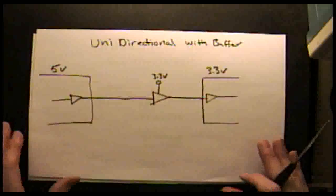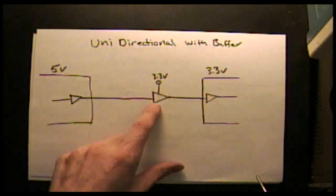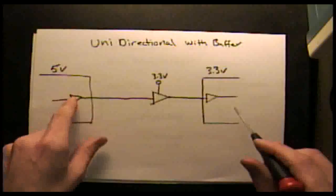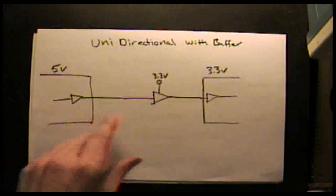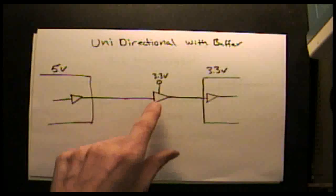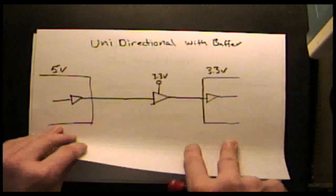If you need to communicate between parts unidirectionally, you can use a simple buffer circuit between the two parts to isolate the 5 volts from the 3.3 volts. You can use an inverter or a simple 3.3-volt 74-series part for this.